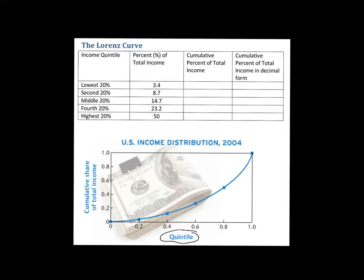Let's say we had 100 people lined up based on their income. On the far left, you have the person who made the least amount of money, and on the far right, the person who made the most. The first 20 percent is the lowest quintile, the next 20 are the second, then the middle 20 percent, then 61 through 80 as the fourth, and 81 through 100 as the highest 20 percent.